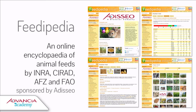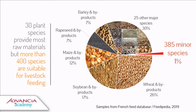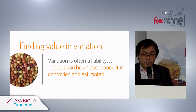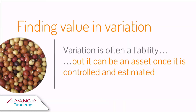In Feedipedia, we are trying to write data sheets about each possible feed. What we found when we made this database — the database behind Feedipedia — if we take all the samples we collected over many years, we got more or less 30 plant species. We can find variation, and the whole story will be about this. We have to face it — it exists, it's very large, and it's a problem. But we'll see that it can become an asset once it's known, studied, and estimated.